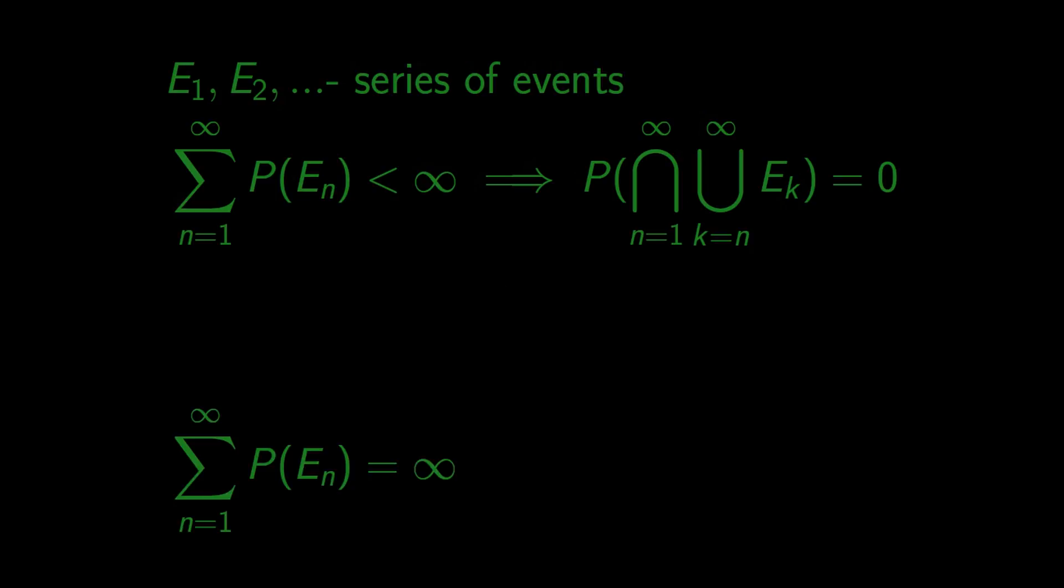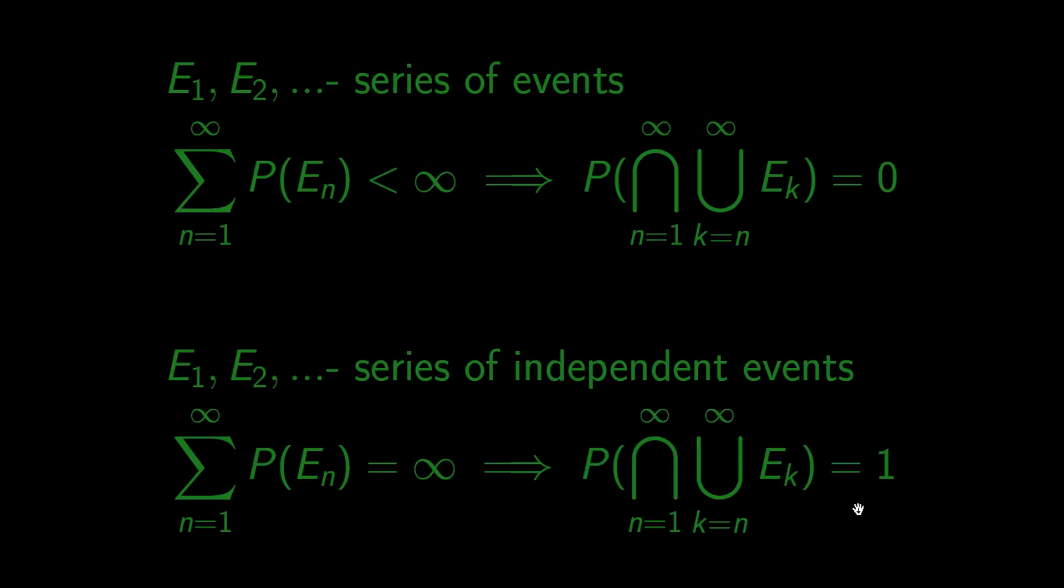The second half of the Borel-Cantelli Lemma says that if these events are independent, the probability of these events happening forever is one. To prove that statement we will need one useful inequality.